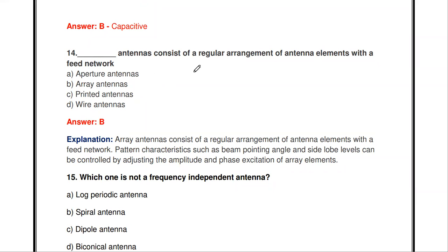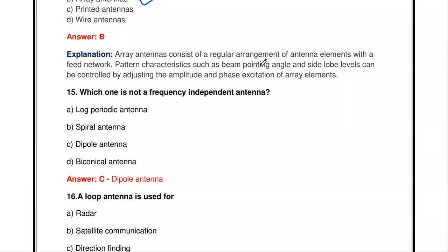Blank antennas consist of a regular arrangement of array elements with a feed network. The options include aperture antenna, array antenna, printed antenna, and wire antenna. The answer is array antenna. An array antenna consists of similar antennas in a regular arrangement with a feed network, where beam characteristics such as pointing angle and side lobe level can be controlled by adjusting amplitude and phase excitation.